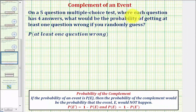On a five question multiple choice test where each question has four answers, what would be the probability of getting at least one question wrong if you randomly guess?